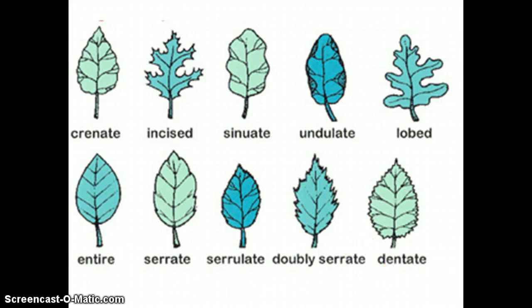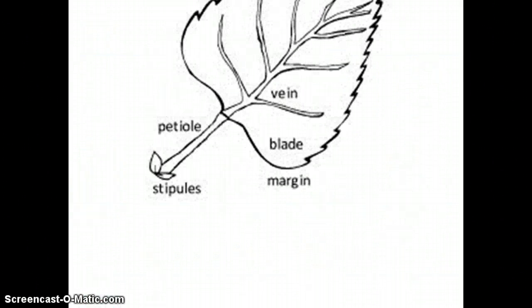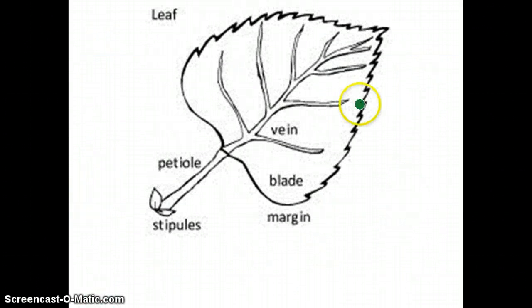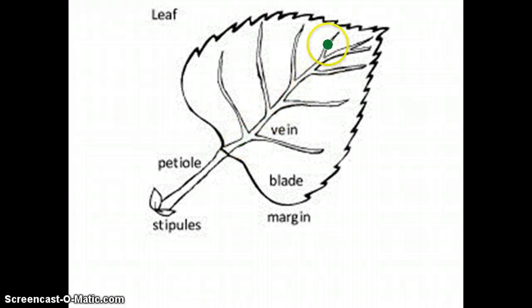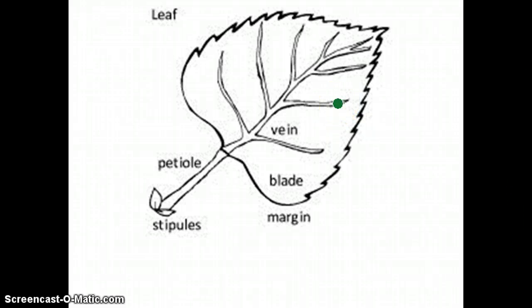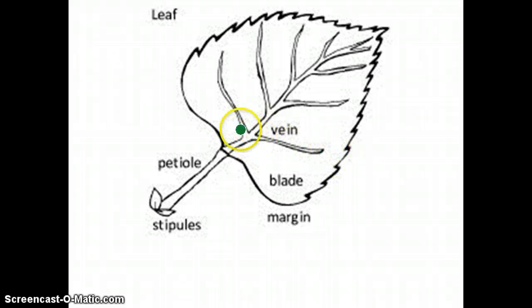Next we are going to look at the vein. The vein is this whole part — it looks like a tree within the leaf. Those are vessels within the leaf for transport of nutrients, water, and oxygen.